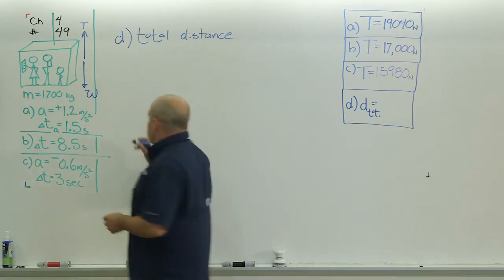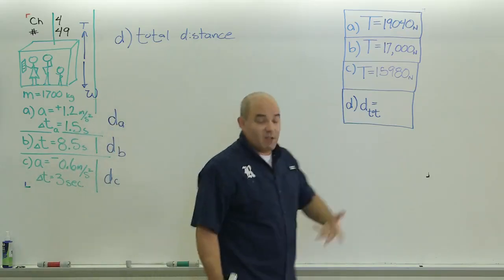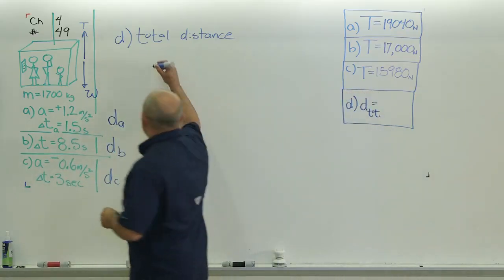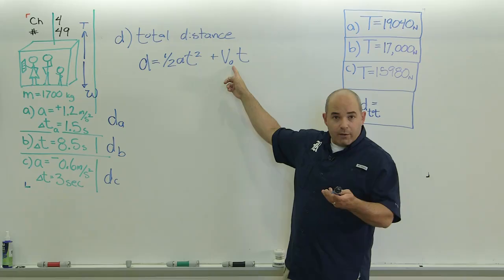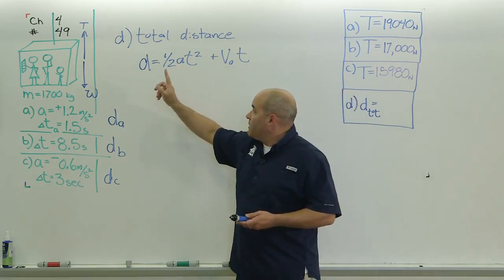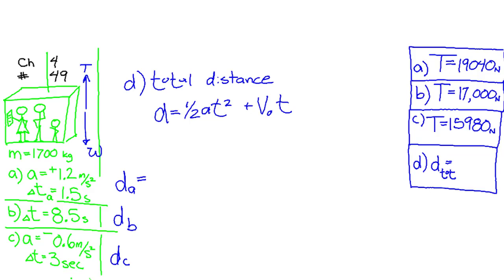I thought if I need to find the total distance, I'm going to have to find the distance that traveled in part A, the distance that traveled in part B, and the distance that traveled in part C, and add all those together. Let's just start right here. We know the elevator starts from rest and accelerates upward for 1.5 seconds. So, I use this formula. Didn't have any initial velocity, so I don't have to plug anything in there. I knew the time and I knew the acceleration. It turns out that the distance for the first part using that formula got me 1.35 meters.